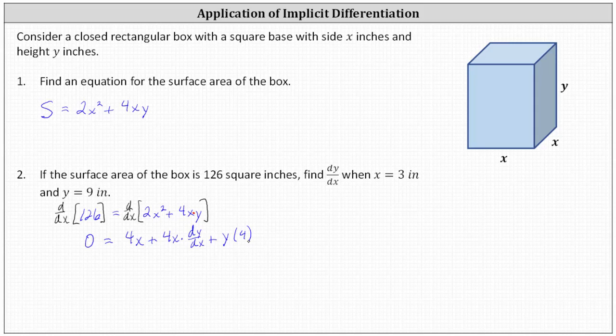Now we need to solve for dy/dx. Let's subtract 4x and also subtract 4y on both sides. This gives us negative 4x minus 4y equals 4x times dy/dx. To solve for dy/dx, we need to divide both sides by 4x.